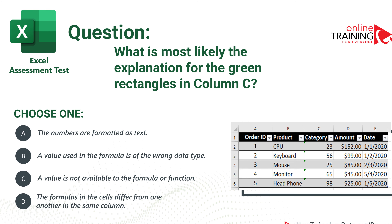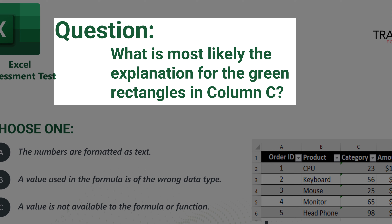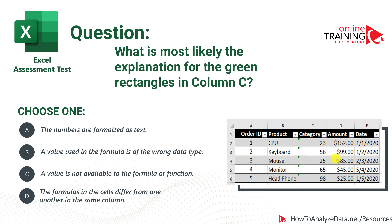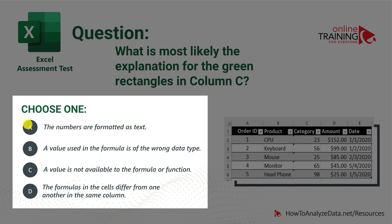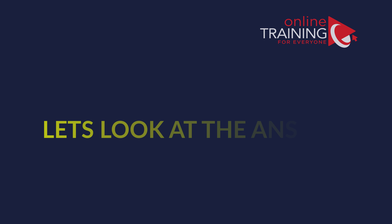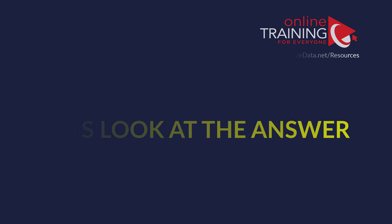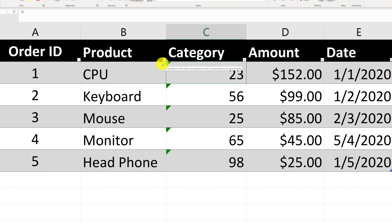Now let's look at a question that tests your knowledge of Excel formatting rules. What is the most likely explanation of the green rectangles in column C? You see rectangles in the upper-left corner of cells in the category column. The four choices are: the numbers are formatted as text; a value used in a formula is of the wrong data type; a value is not available to the formula or function; and the formulas in the cell are different from values in the same column.